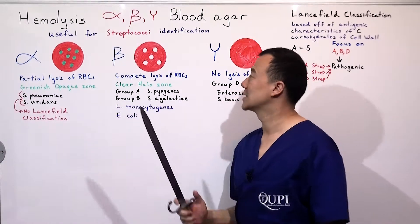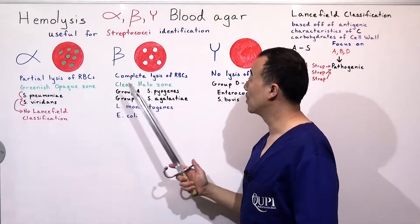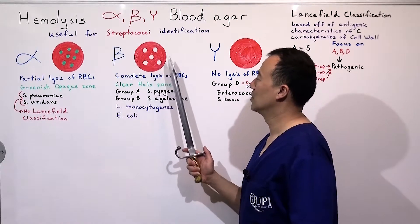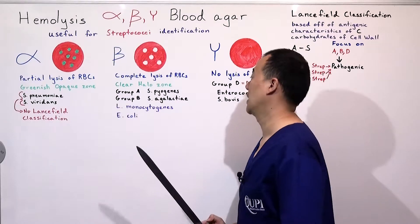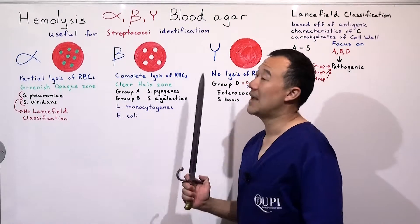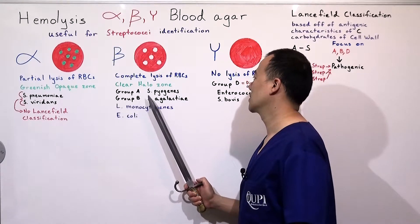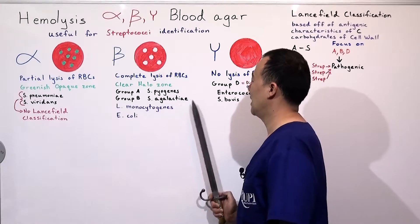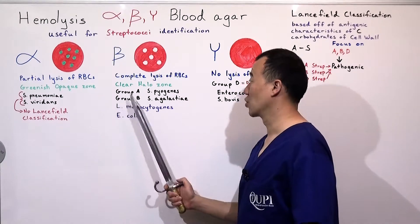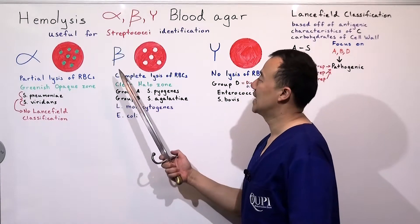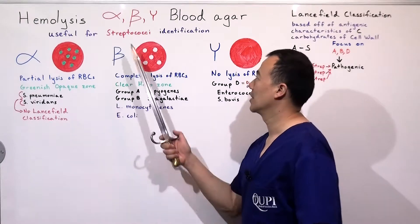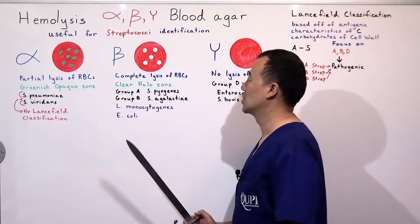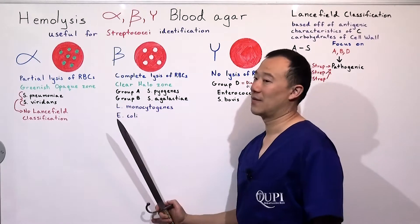Continuing on our journey is beta hemolysis. Beta hemolysis is complete lysis of red blood cells, and there is usually a clear halo zone on the blood agar plate. The bacteria that have beta hemolysis are Group A Streptococcus pyogenes and Group B Streptococcus agalactiae. There are also two other bacteria that are beta hemolytic: Listeria monocytogenes and E. coli.